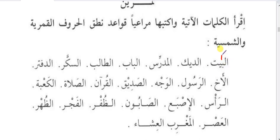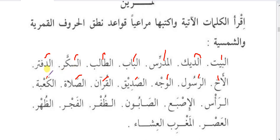Exercise — read the following words and write them following the rules of huruful shamsiyya and huruful qamariyya: al-baytu — qamariyya; ad-deeku — shamsiyya; al-mudarrisu — qamariyya; al-babu — qamariyya; at-talibu — shamsiyya; as-sukaru — shamsiyya; ad-daftaru — shamsiyya; al-akhu — qamariyya; ar-rasulu — shamsiyya; al-wajhu — qamariyya; as-sadeequ — shamsiyya; as-sa'atu — shamsiyya; as-sabunu — shamsiyya; az-zufru — shamsiyya; al-fajru — qamariyya.